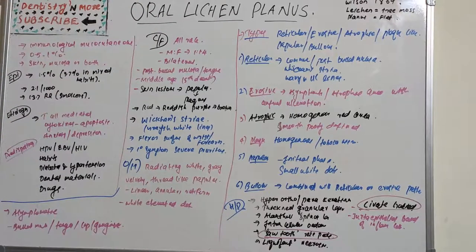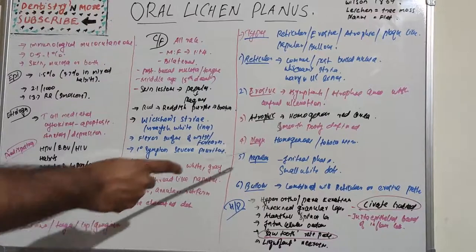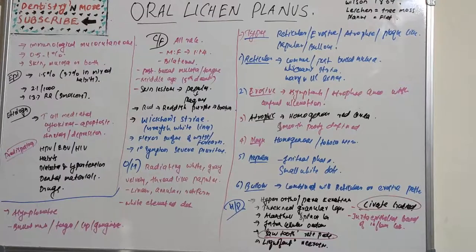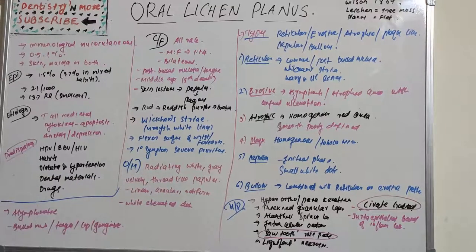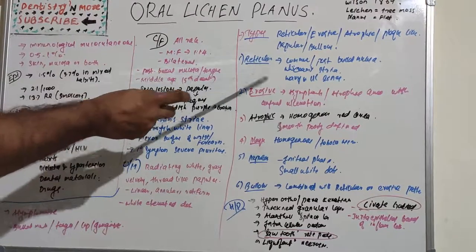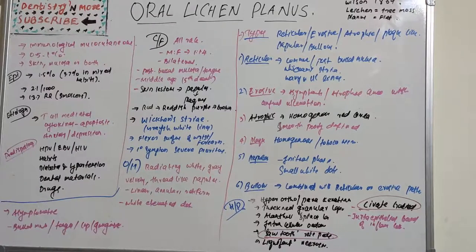The plaque type features a homogeneous, well-demarcated white plaque, not always surrounded by striae, and is very common in tobacco users. It can be single or multifocal. The papular type is usually present in the initial phase of the disease, clinically characterized by small white dots that intermingle with the reticular form, and papular elements may merge with striae as part of the natural course.